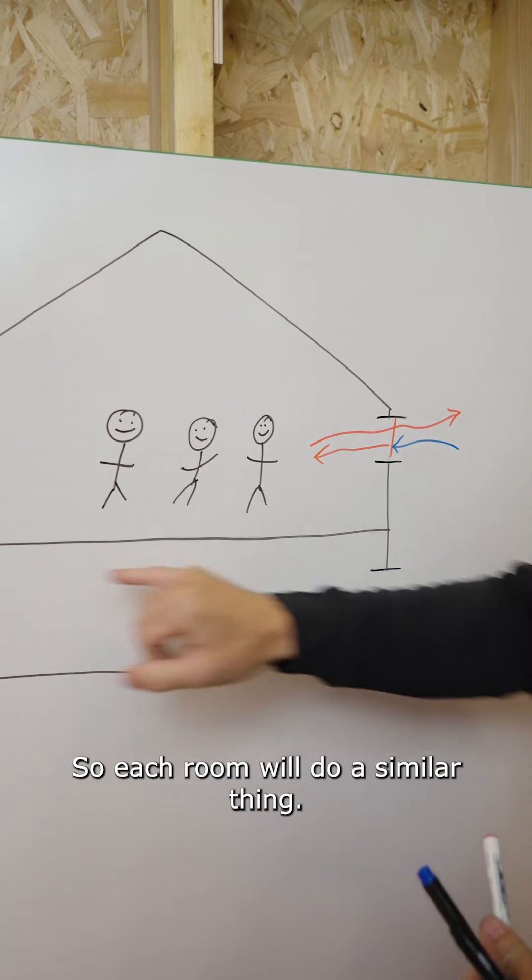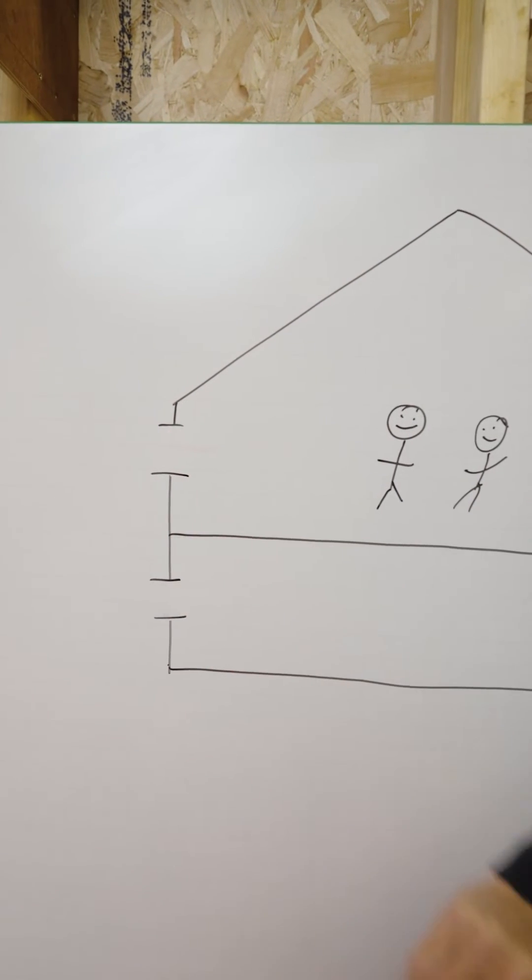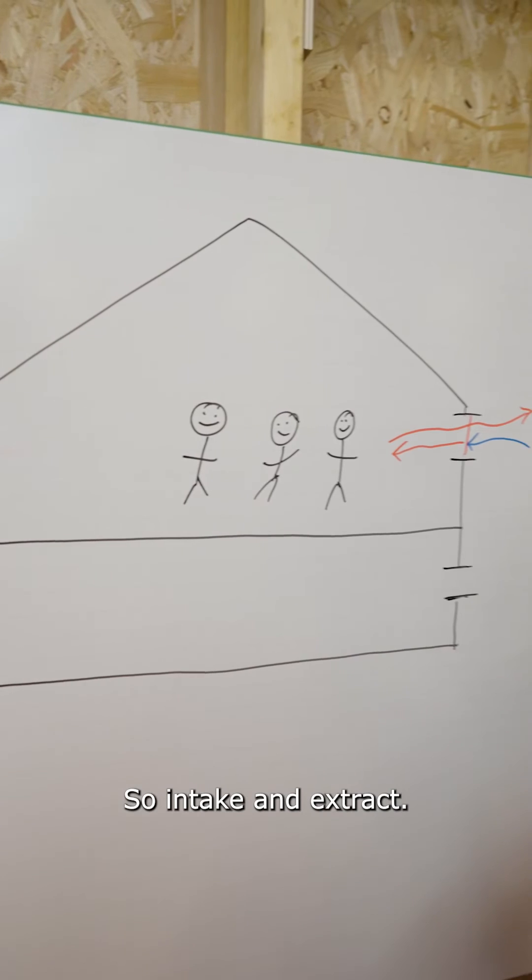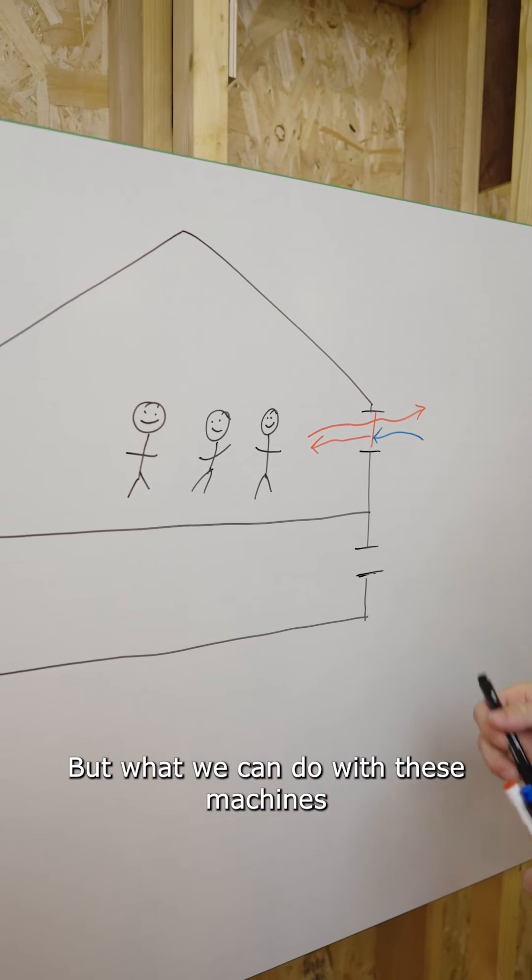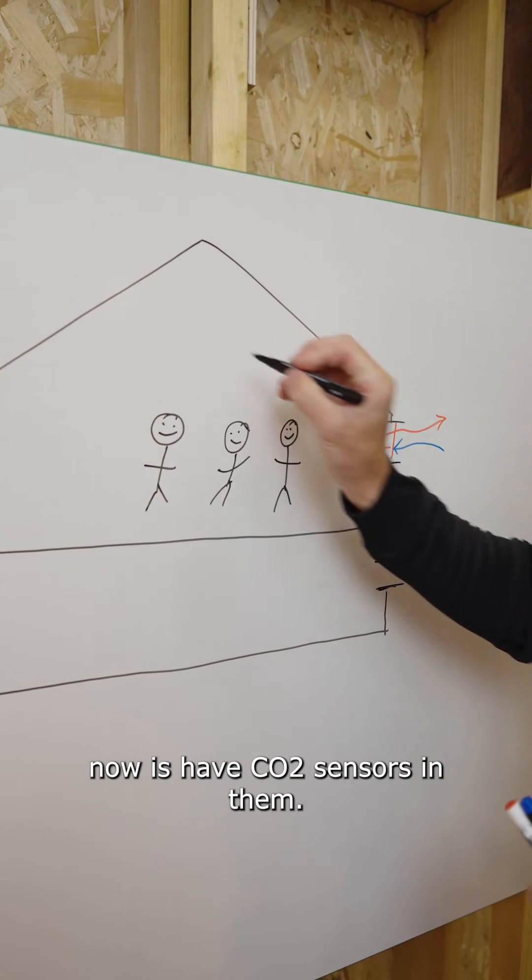Each room will do a similar thing—intake and extract—but what we can do with these machines now is have CO2 sensors in them.